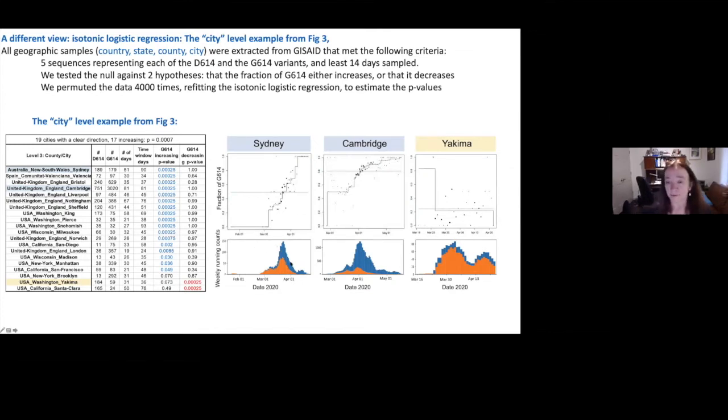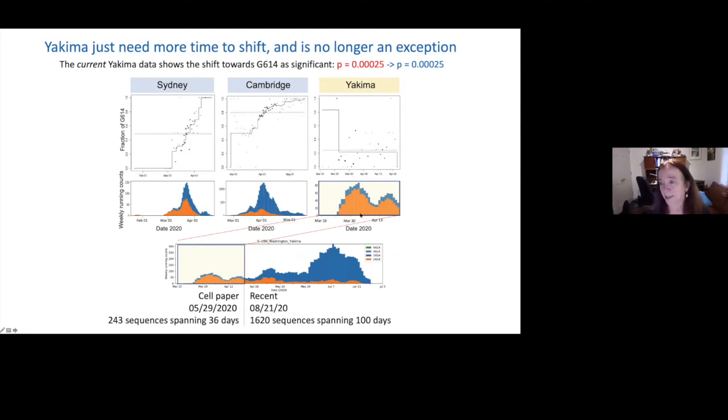We devised another way of going through all of GISAID and looking at sites. With this tool, we actually look at the whole sampling period, and we do isotonic logistic regression. What this plot shows you is, here in Sydney for example, this is the fraction of G614, and there was none of it in the beginning. The size of the circle represents the number of samples collected on a given day. And you can see that the proportion of G614 is going up. The only exceptions that we found here were Santa Clara County and Yakima, and if you give it enough time, Yakima also has shifted. So there were almost no exceptions to the pattern of increase globally at any geographic level.